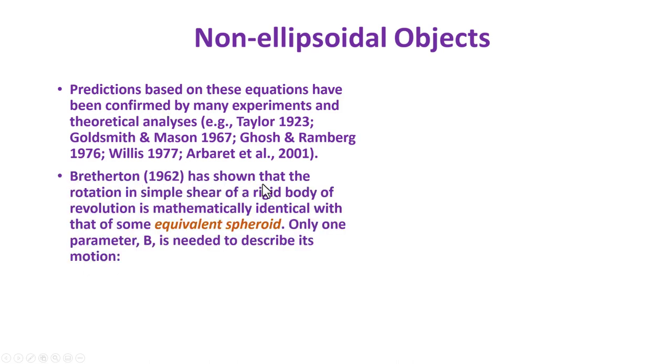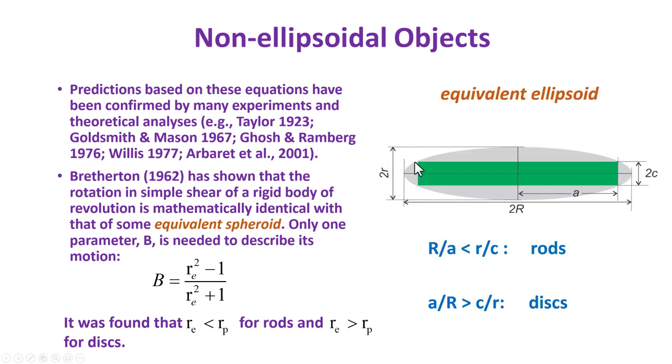Bretherton particularly has shown that the rotation in simple shear for a rigid body of revolution doesn't have to be a spheroid. It can be any rigid body as long as it has the symmetry of revolution. The behavior of a rigid body of revolution is mathematically identical to that of an equivalent spheroid. Only the parameter b needs to be described by an effective parameter. So if the object is not a spheroid but an object of revolution, then instead of using the actual aspect ratio, we use an effective aspect ratio.